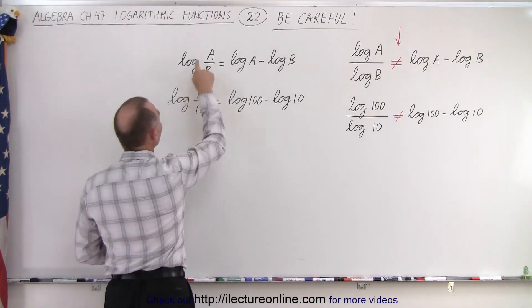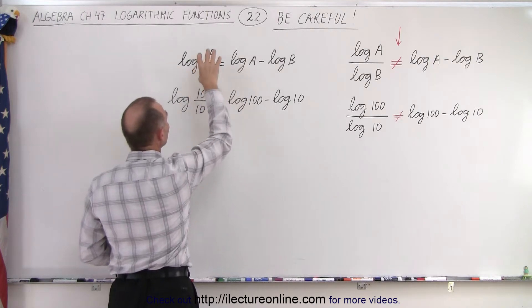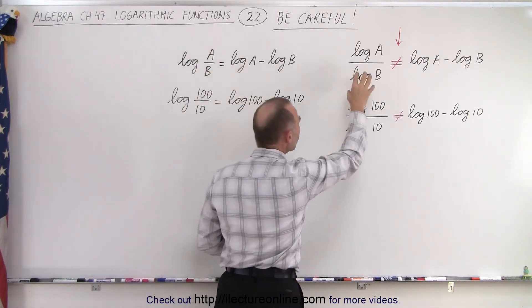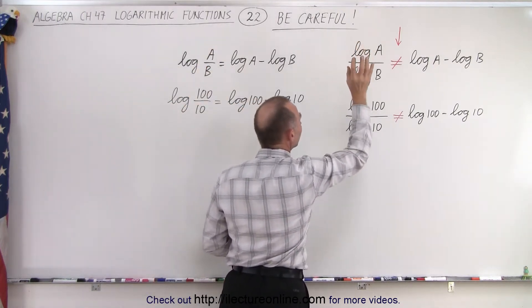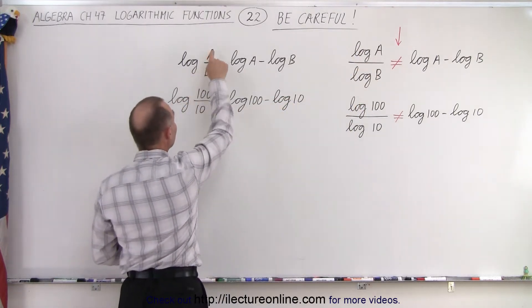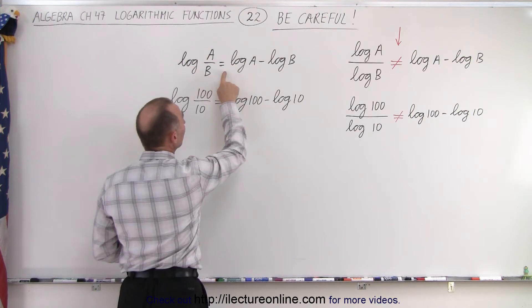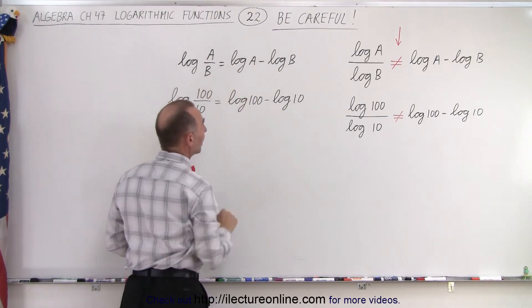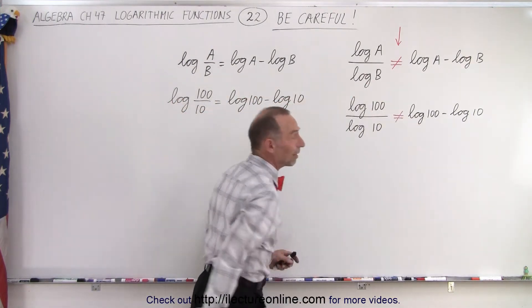Remember the rule is the log of A over B, the log of a quotient, not the quotient that has the log of A in the numerator and the log of B in the denominator. So on the left side the log of A divided by B is indeed equal to the log of A minus log of B but that's not the case on the right side.